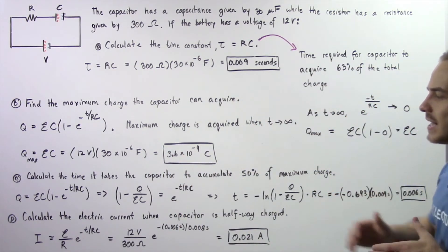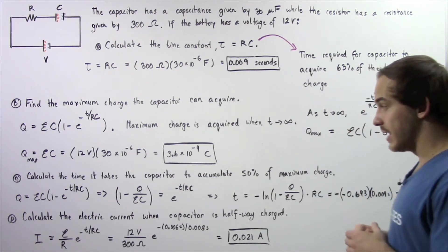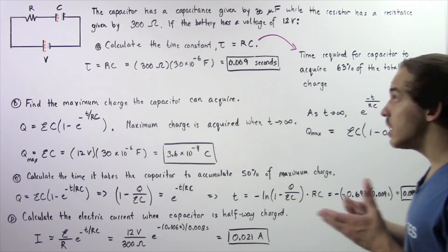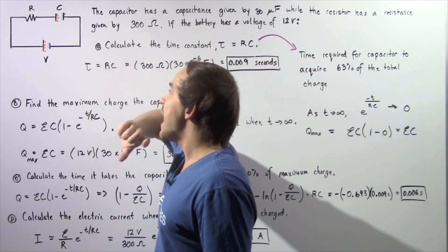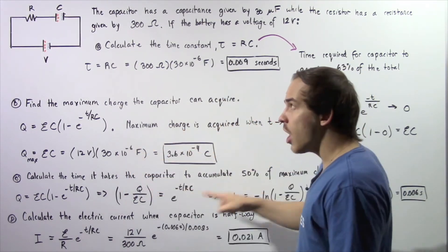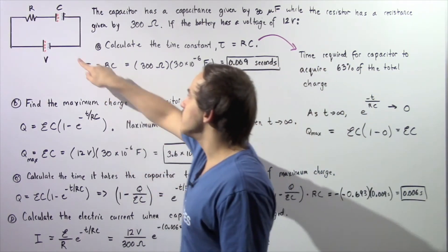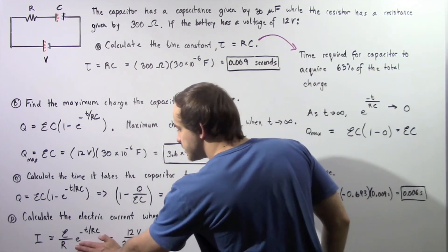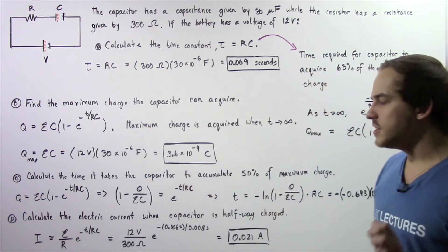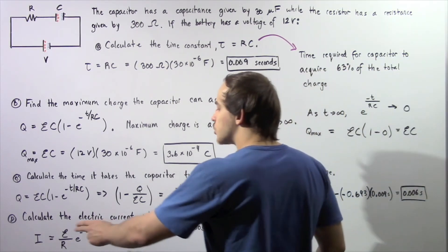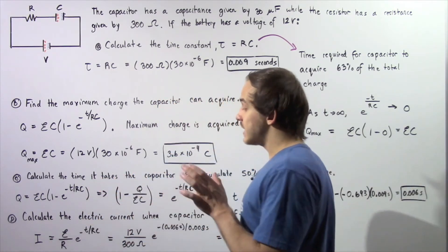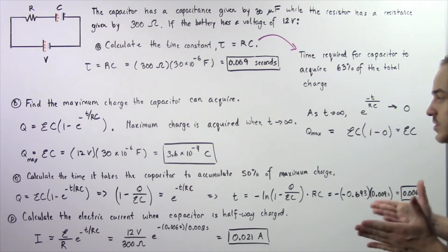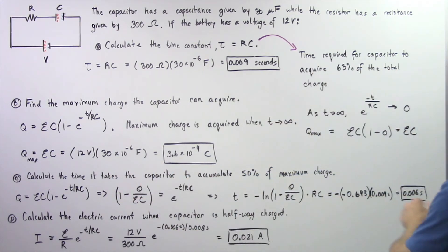Now let's move on to part D. In part D, we want to calculate the electric current when the capacitor is halfway charged — in other words, when it contains half of the maximum charge — and determine what the electric current in the circuit will be. We use the current equation derived in the previous lecture.